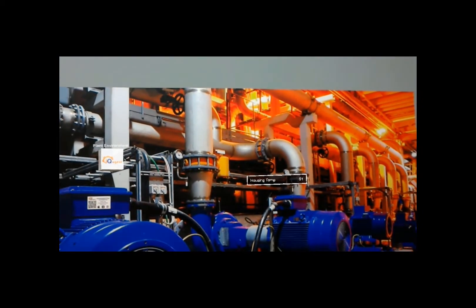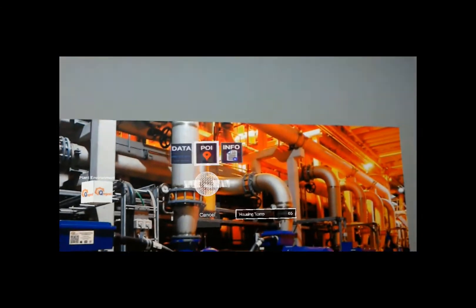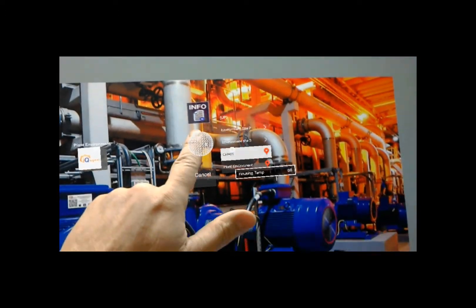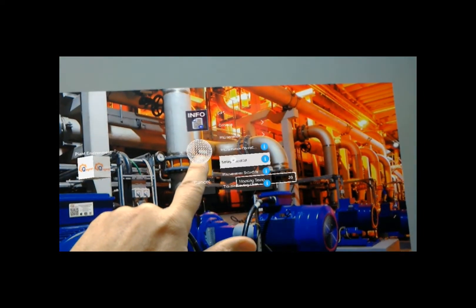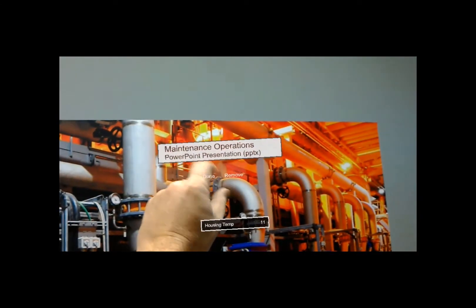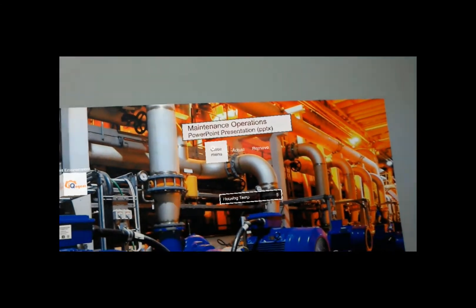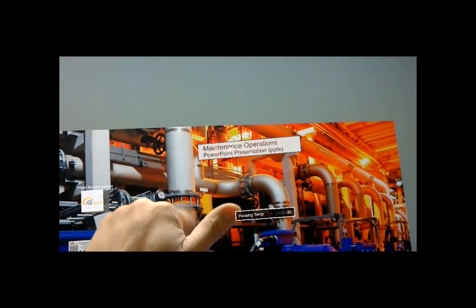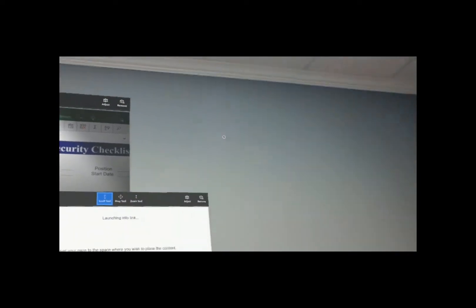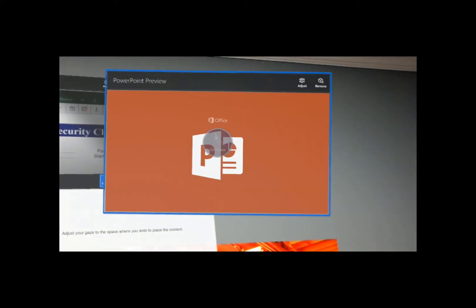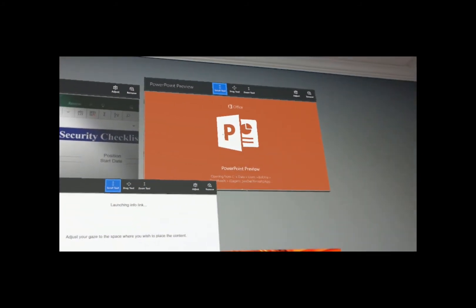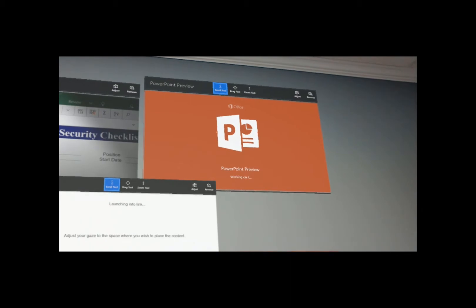If I want an info link, it's pretty much the same — new item, select. Then I'll go to environment, plant environment, and let's pull up maintenance operations. Move it back, hit done, and close the menu. Of course I can just tap on this and it's going to open up my documents. I'll just gaze over here in an empty space, and it's going to give me my PowerPoint viewer and allow me to view and interact with that document.